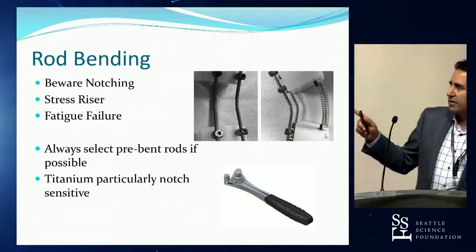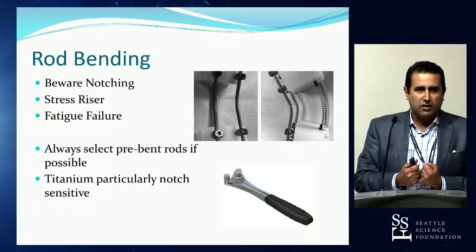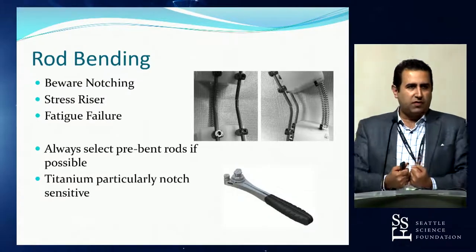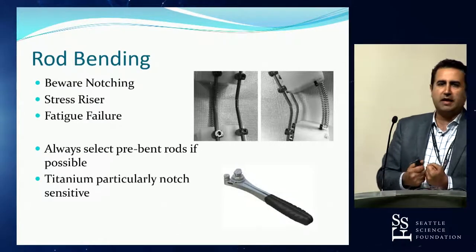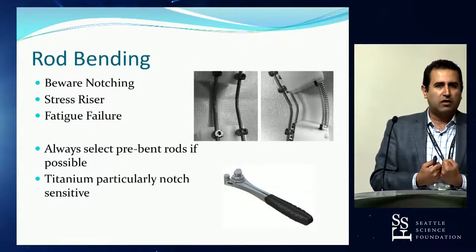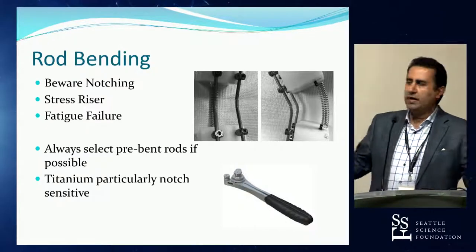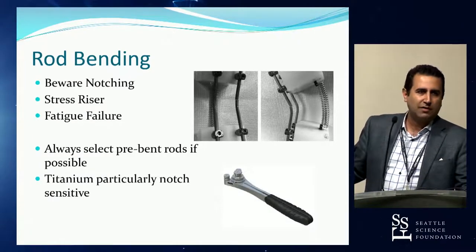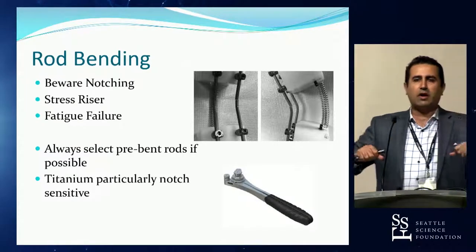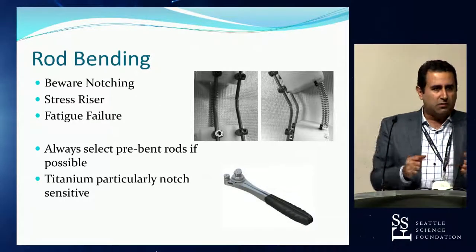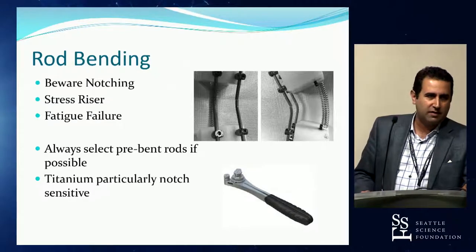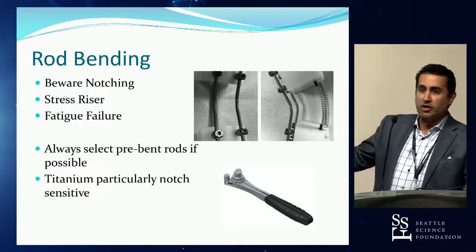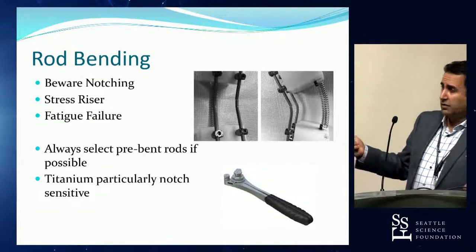The notching phenomenon: when bending a titanium alloy rod, microstresses are created at the point of the notch, leading over time to fatigue failure, particularly because the body subjects the rod to constant cyclical loads. The key points: select pre-bent rods if possible, minimize the amount of notching required. Make markers on the rod ahead of time with some judgment about where you want the bends — measure the curves, mark out where you need lordotic and kyphotic correction — rather than bending multiple times back and forth, which will cause failure.